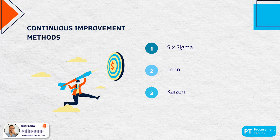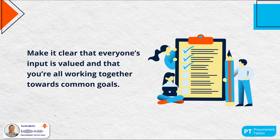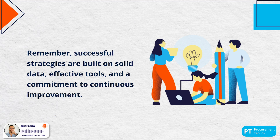Continuous improvement is crucial for sustaining and enhancing performance. Key methods include Six Sigma, which focuses on reducing defects and improving quality through a structured, data-driven approach; Lean, which aims to eliminate waste and improve efficiency — doing more with less; and Kaizen, which is all about continuous, incremental improvements, encouraging everyone to look for small ways to improve processes. Foster a culture of continuous improvement through open communication and collaboration within your team. Successful strategies are built on solid data, effective tools and a commitment to continuous improvement.